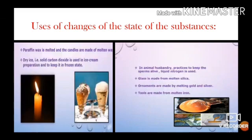Various uses of changes in physical state. Let us see how the following substances are useful to us after changing into a physical state. Candles are made by melting paraffin wax. Solid carbon dioxide, that is dry ice, is used to make ice cream and to keep it frozen. Liquid nitrogen is used in animal husbandry. Silica is melted to make glass. Metals like gold and silver are melted to make ornaments. Iron is melted to make tools. These are the various uses of changes in physical state which are useful to us.